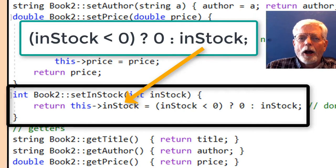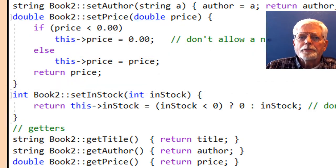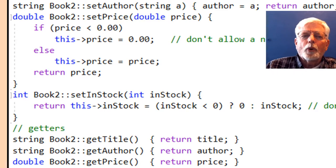The assignment operator places the value received from main in the argument named i into the object's in-stock member variable. Return in-stock sends back the value that was actually stored in the in-stock member variable.